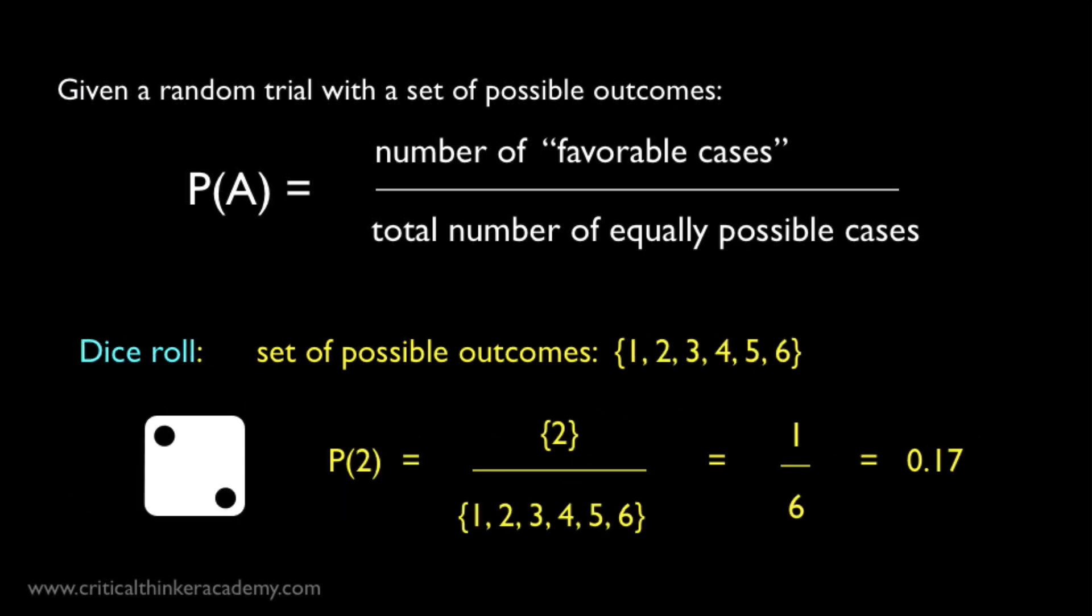Let's look at a dice example. What's the probability of rolling a 2 on a six-sided die? Well, there are six equally possible outcomes, and only one outcome where it lands 2, so the numerator is 1, and the denominator is 6. So the answer is 1 in 6, or 0.17, or about 17 percent.